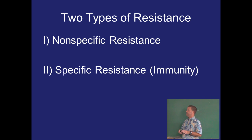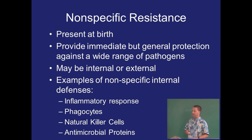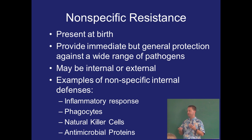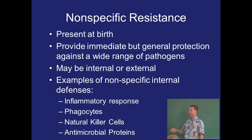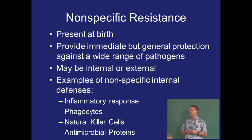Nonspecific resistance is present at birth and is effective against a general range of bacteria, viruses, and fungi. Examples include the inflammatory response, phagocytes (macrophages and neutrophils), a special type of lymphocyte called the natural killer cell, and antimicrobial proteins. These are all very generalistic — they can neutralize several different types of antigens.